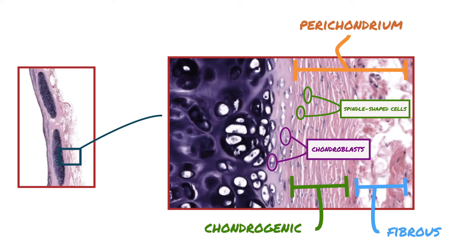These spindle-shaped cells have the capability to differentiate into chondroblasts. Chondroblasts are the precursors of the chondrocytes, which are the mature cartilage cells, and chondroblasts also contribute to the formation of the extracellular matrix.